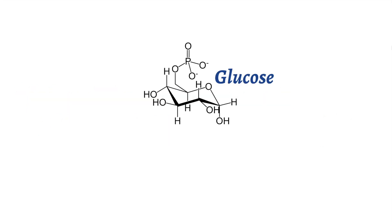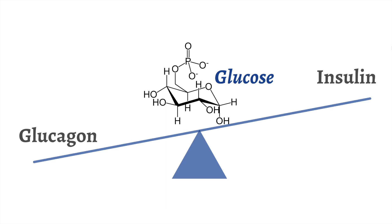Glucose is the main fuel for energy for all the living cells in our body. We all control the level of glucose in our body by the balance of two main hormones called insulin and glucagon. In general, insulin causes glucose to be pulled into our cells and stored away for later use, while glucagon recruits glucose from various sources when we need more fuel for our cells. The balance between these hormones is very important.